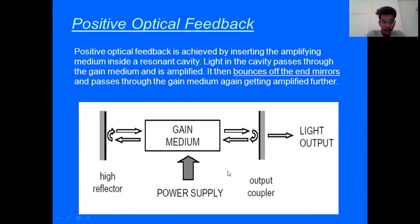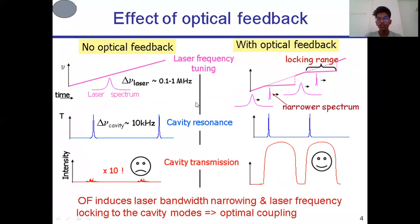There are two types of things which are high reflector and output coupler. In high reflector, the power supply will gain the medium and give it back so that the light cavity passes through the gain medium and is amplified. It then bounces off the end mirrors and passes through the gain medium, again getting amplified further.